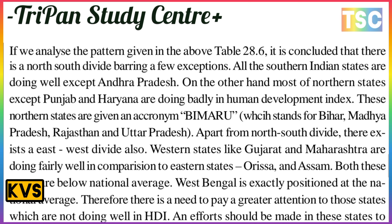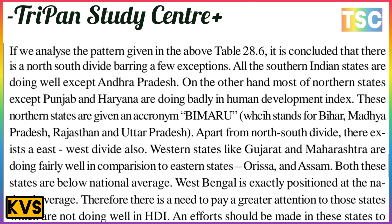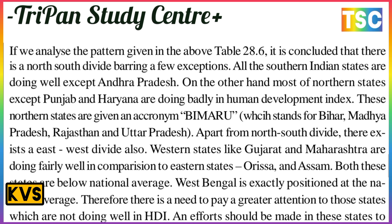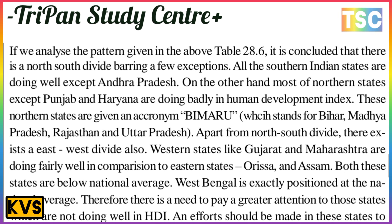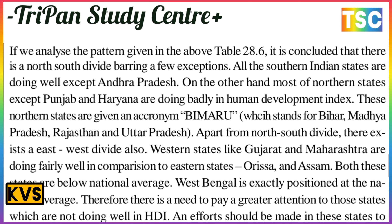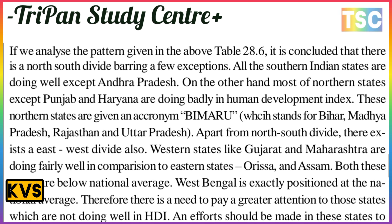The poorly performing northern states are referred to by the acronym BIMARU — B-I-M-A-R-U — which stands for Bihar, Madhya Pradesh, Rajasthan, and Uttar Pradesh. Apart from the north-south divide, there is also an east-west divide.